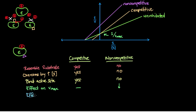Now let's look at the effect on KM by examining the X-intercept, which represents 1 over negative KM. For competitive inhibitors, the X-intercept has shifted to the right, meaning KM has increased because it's a negative reciprocal. For non-competitive inhibitors, the X-intercept is the same, so the effect on KM is unchanged.